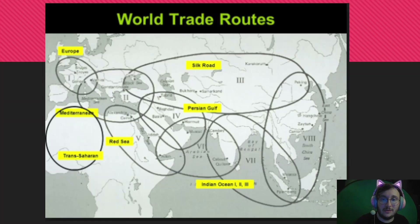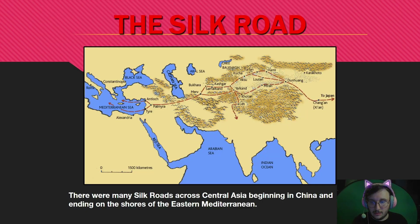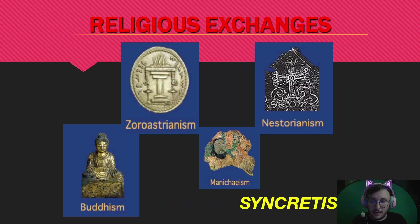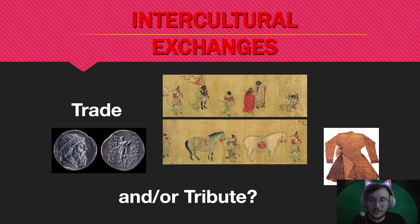This map shows some of the trade routes — you can see the Mediterranean Sea, the Trans-Saharan, the Silk Road, and the Indian Ocean. This shows some of the different religions that will spread. When one religion spreads from one area to another, it blends with the localized culture. Blending two different ideas, groups, or religions is called syncretism — one of the terms you really need to know. Syncretism is the blending of different peoples, religions, and ideas to form a new idea — intercultural exchange through trades and tribute.